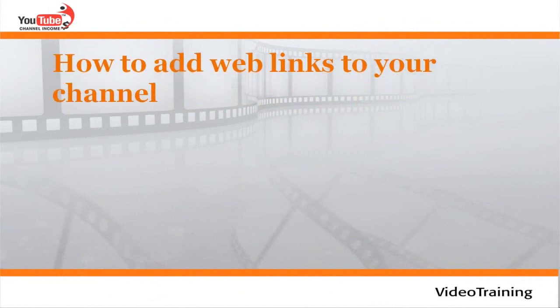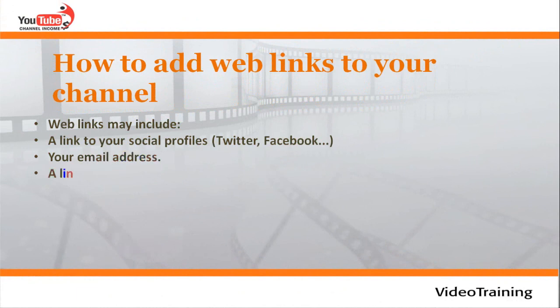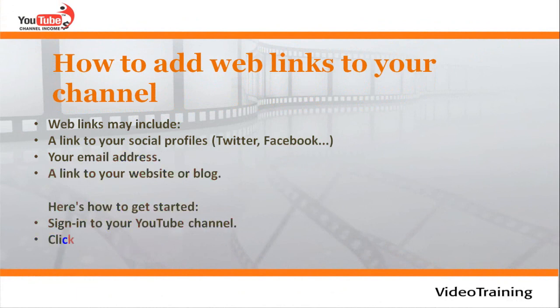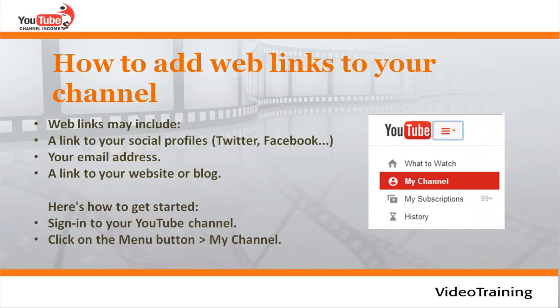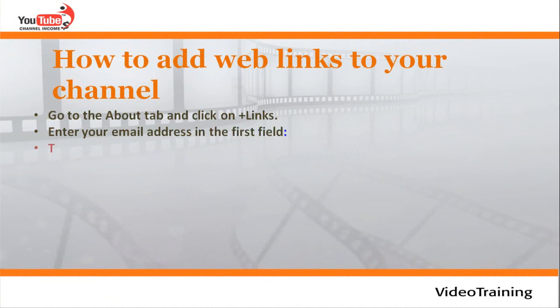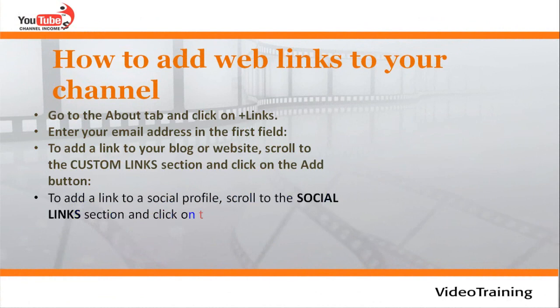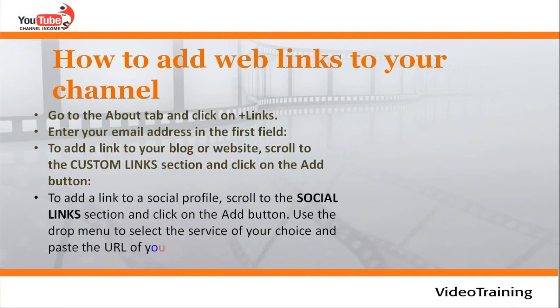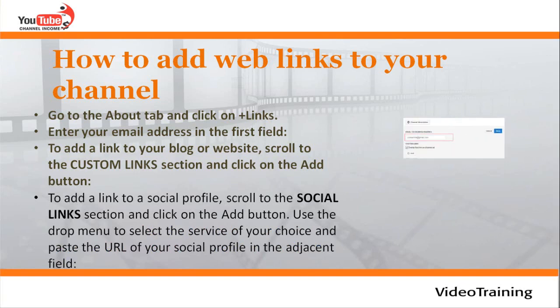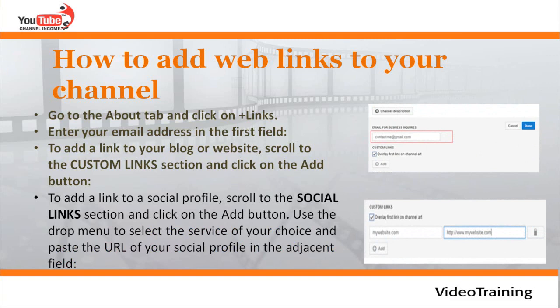Web links you can add to your channel may include a link to your social profile on Twitter or Facebook, your email address, a link to your website or blog. Sign in to your YouTube channel, click the menu button, then My Channel, go to the About tab, and click Add Links. Enter your email address in the first field. To add a blog or website link, scroll to the Custom Link section and click Add. To add a social profile, scroll to the Social Link section, click Add, use the drop-down to select your service, and paste the URL of your social profile.